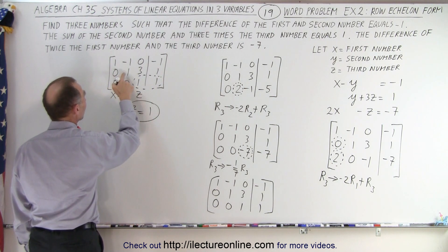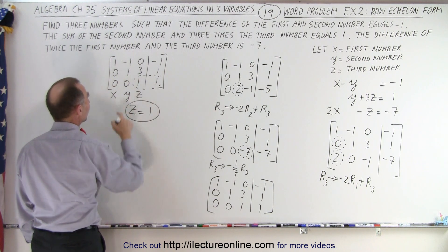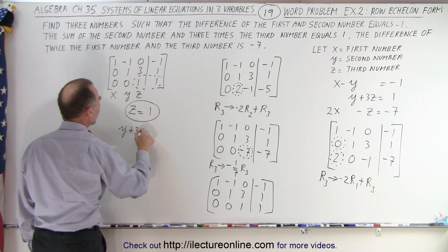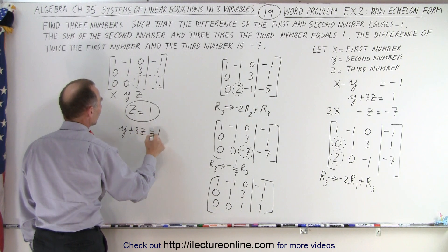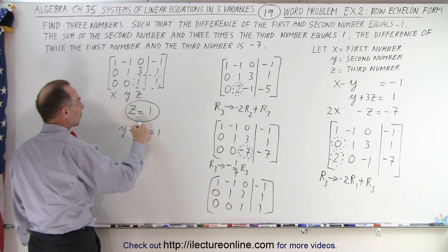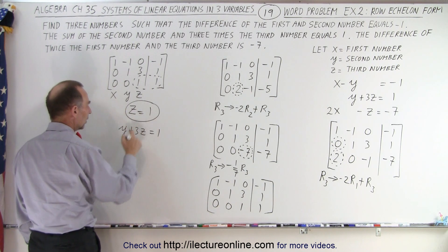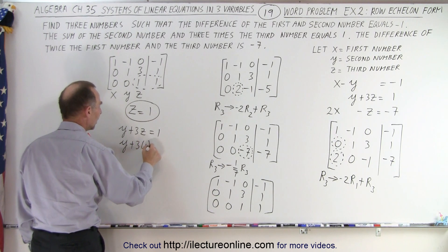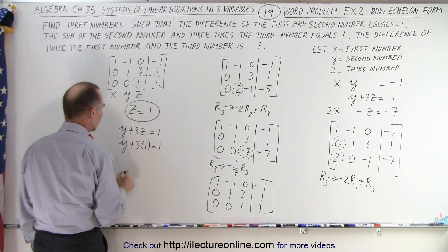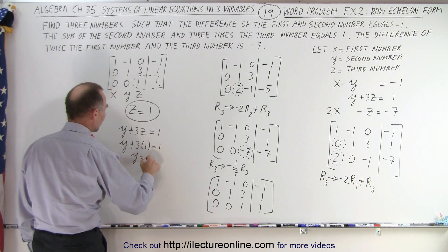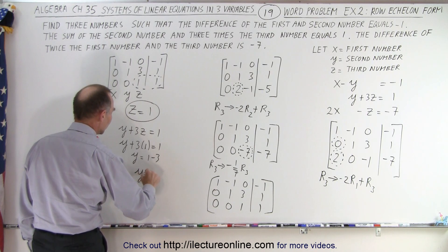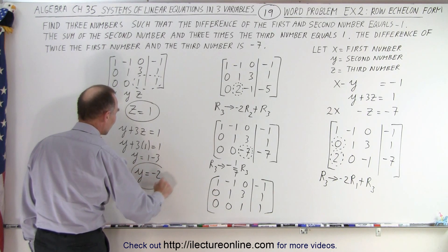Going to the second row: zero·x + one·y + three·z = 1, so y + 3z = 1. Since z = 1, we substitute: y + 3(1) = 1, giving y = 1 − 3, so y equals negative two. That's our second variable.